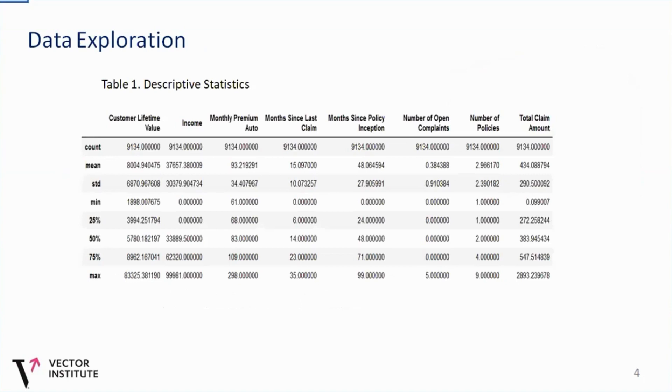So we try to visualize our dataset, which we obtained from the Kaggle database. And from the descriptive statistics, we could see that it has 9,134 records and 40 columns. Of course, the total claim amount here is a dependent variable that we are trying to predict. And it has other independent variables. You can see the main standard deviation and other values.